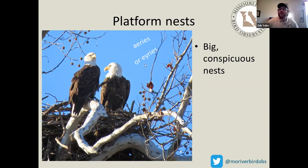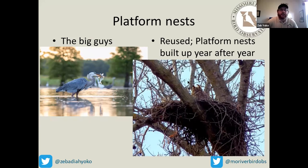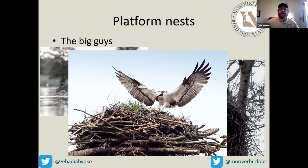In this example we've got bald eagles — eagle nests are sometimes called eyries. Eagles are one of the birds that use these big conspicuous nests, as do herons and egrets, which also nest in colonies called rookeries. Other big birds like owls will use platform nests too — owls will sometimes mooch nests from other birds or use cavities something else already dug. Platform nests are often reused year after year, and are built up more each year until they fall apart.